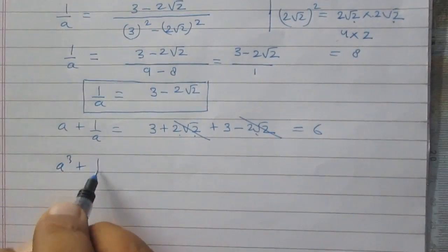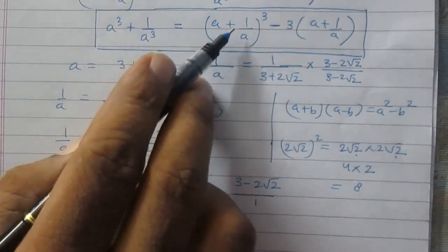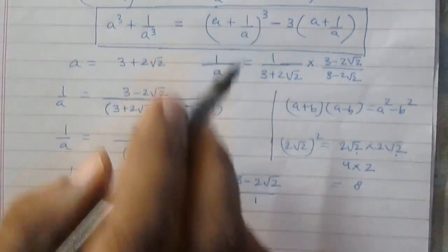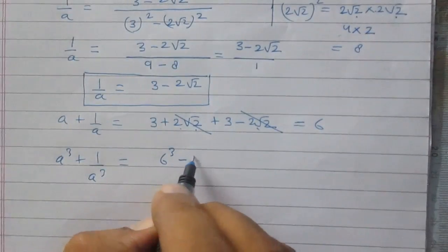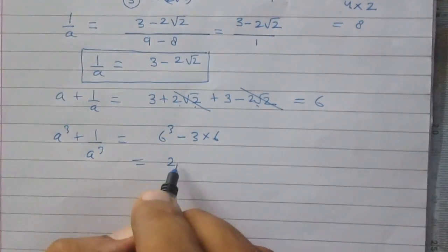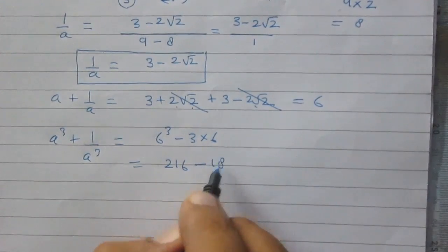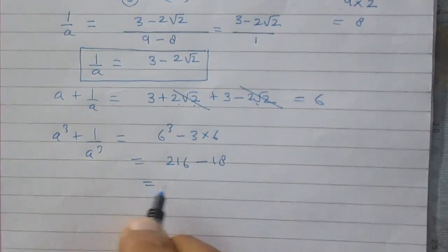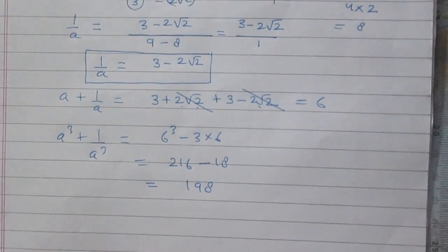Using this relation, a cube plus 1 by a cube equals a plus 1 by a whole cube minus thrice of a plus 1 by a, which is 6 cube minus thrice of 6. 6 cube is 216, and 3 times 6 is 18, so 216 minus 18 is 198. This is the answer.